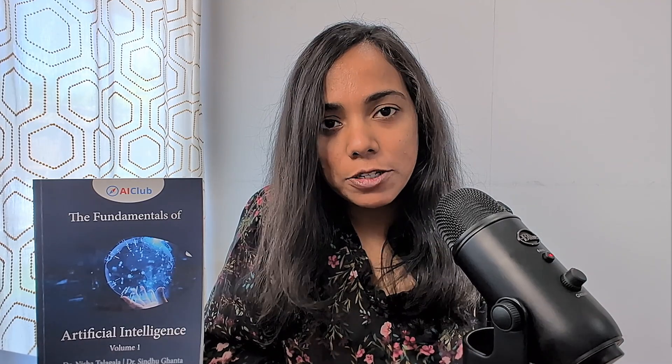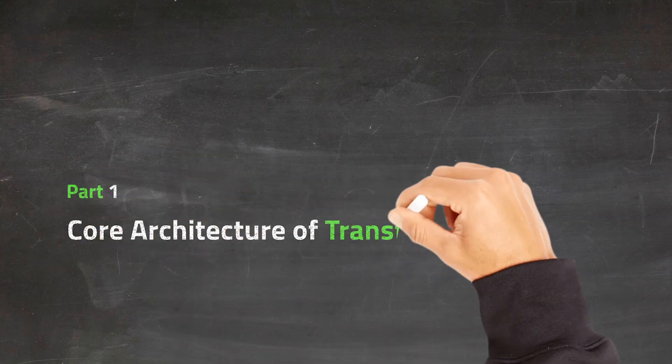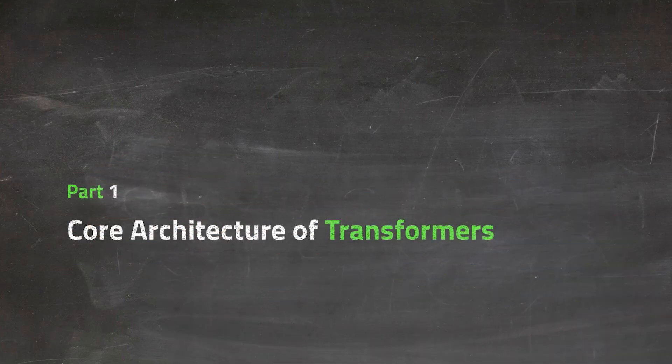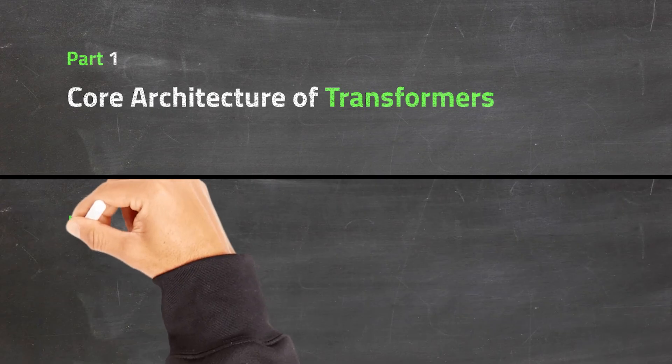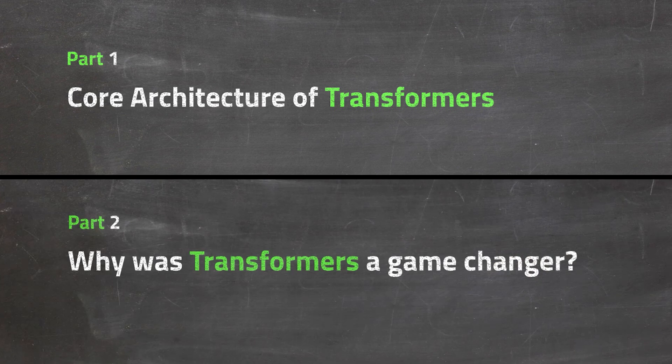This explanation is divided into three parts. First part talks about the core architecture of transformers, its components, and what each of it is responsible for.